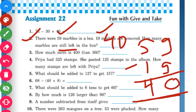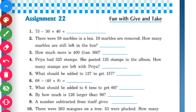Let us move to question number 3. Question number 3 says: how much more is 400 than 360? We have done this type of question in our last video. We have to find out how much 400 is more than 360, so we will subtract 360 from 400.